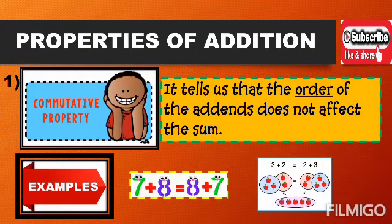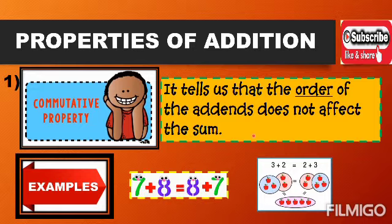This slide shows the first property of addition, and this is the commutative property of addition. It states that the order of the addends does not affect the sum. The key term here is order.